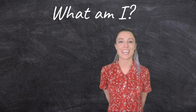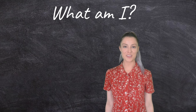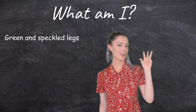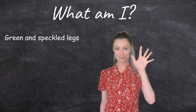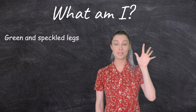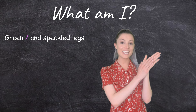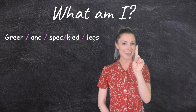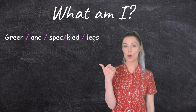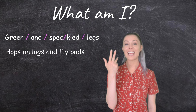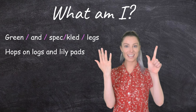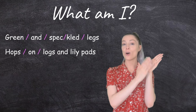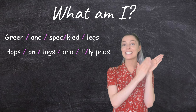Are you ready? The first line: 'Green and speckled legs.' Can you see how those are five syllables? Let's clap it out — green and speckled legs. That was my first line. My next line: 'Hops on logs and lily pads.' Let's do that again — hops on logs and lily pads. That was seven.